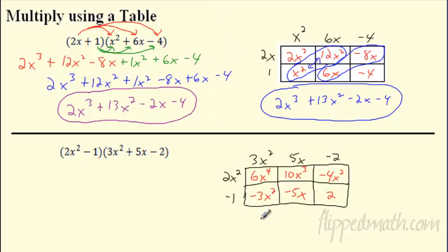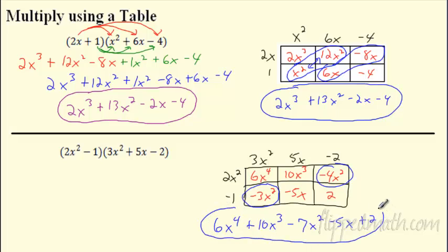So once I box it all up, look for like terms. There's 6x to the 4th. Did the diagonal trick work for me? It didn't in this case. Bummer. But that's okay. I can see I got a 10x cubed there. I do have some like terms here. I've got this minus 3x squared and this minus 4x squared. So I'm going to have a minus 7x squared. I see an x there. Minus 5x plus 2. So even though it wasn't as pretty as that one on top, sometimes it happens. It still works out, doesn't it?